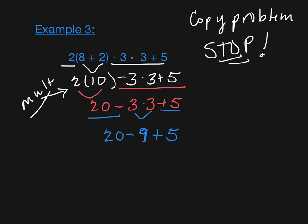Carrying on. Left to right now, because I've got addition and subtraction only. 20 minus 9 is 11, plus 5. And then I end this with 11 plus 5, which is 16.